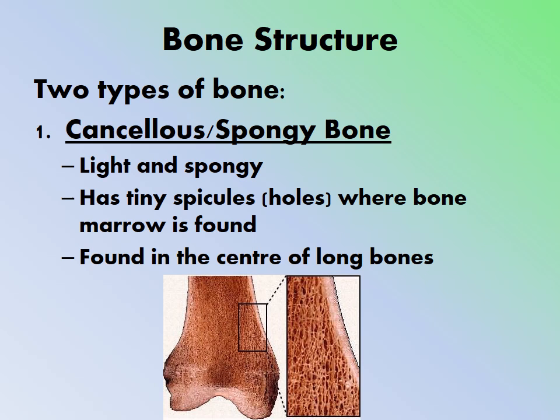There are two different types of bone. Cancellous bone, also called spongy bone, is light and spongy with tiny spicules or holes where bone marrow is found. Cancellous spongy bone is found in the center of long bones, such as the humerus and femur.